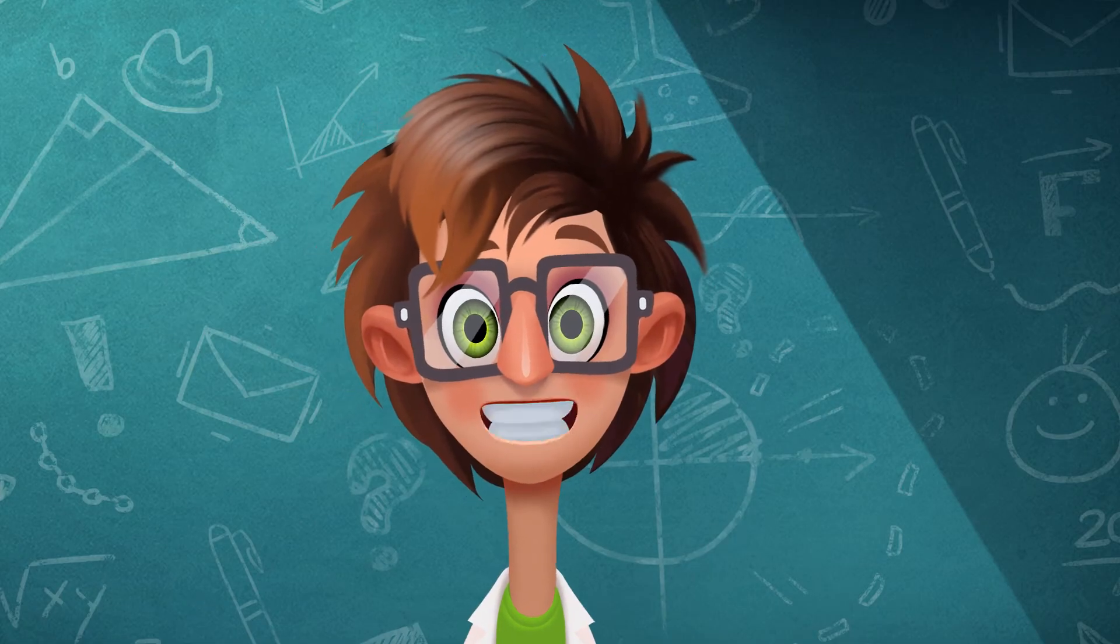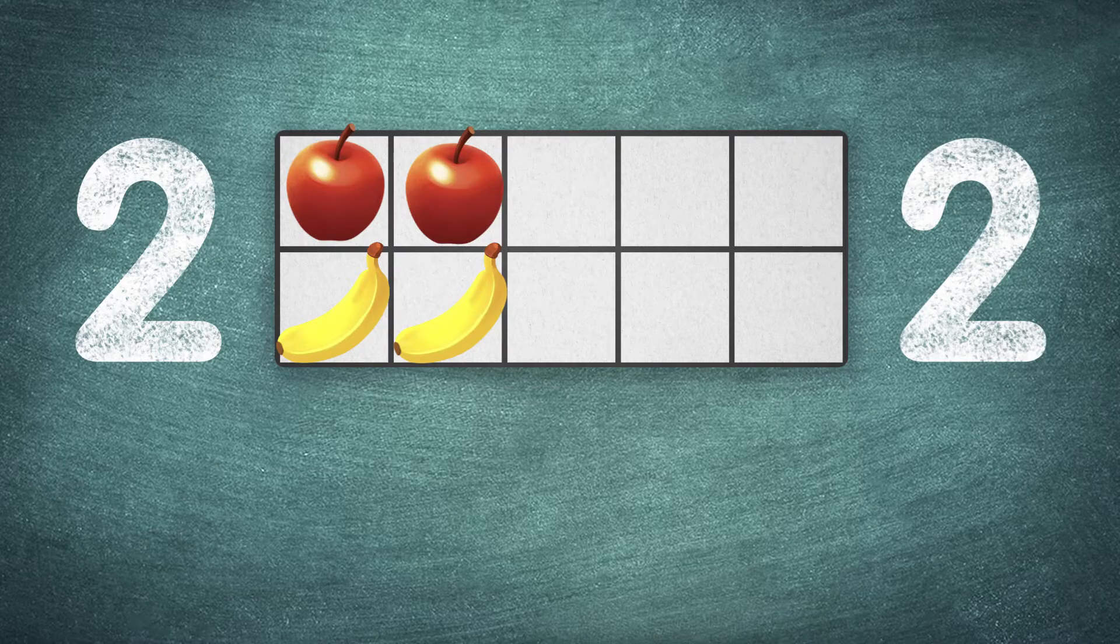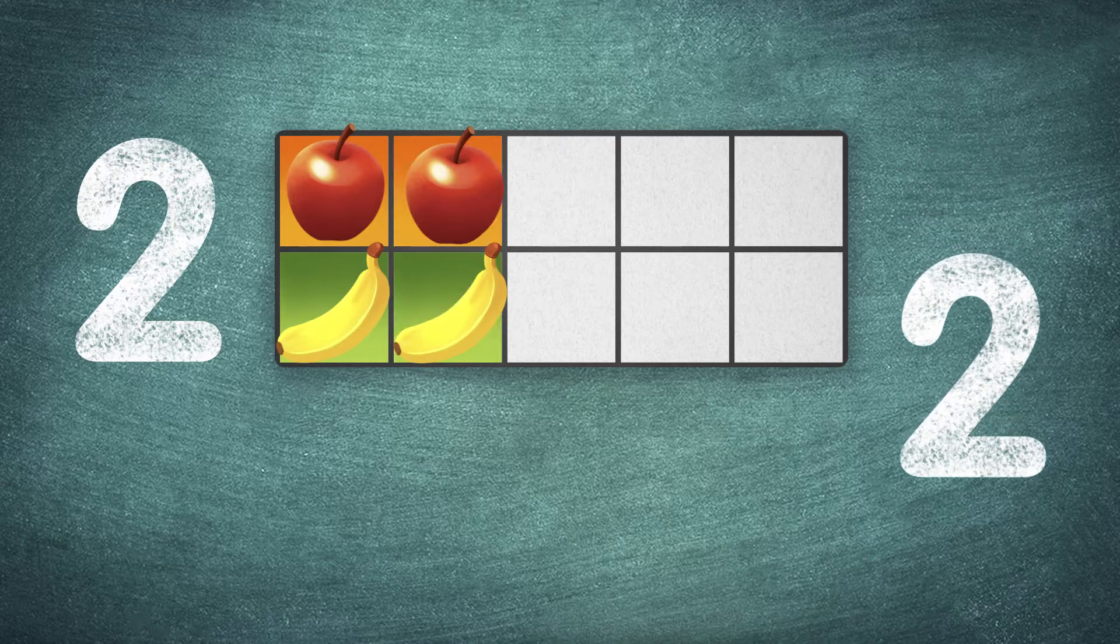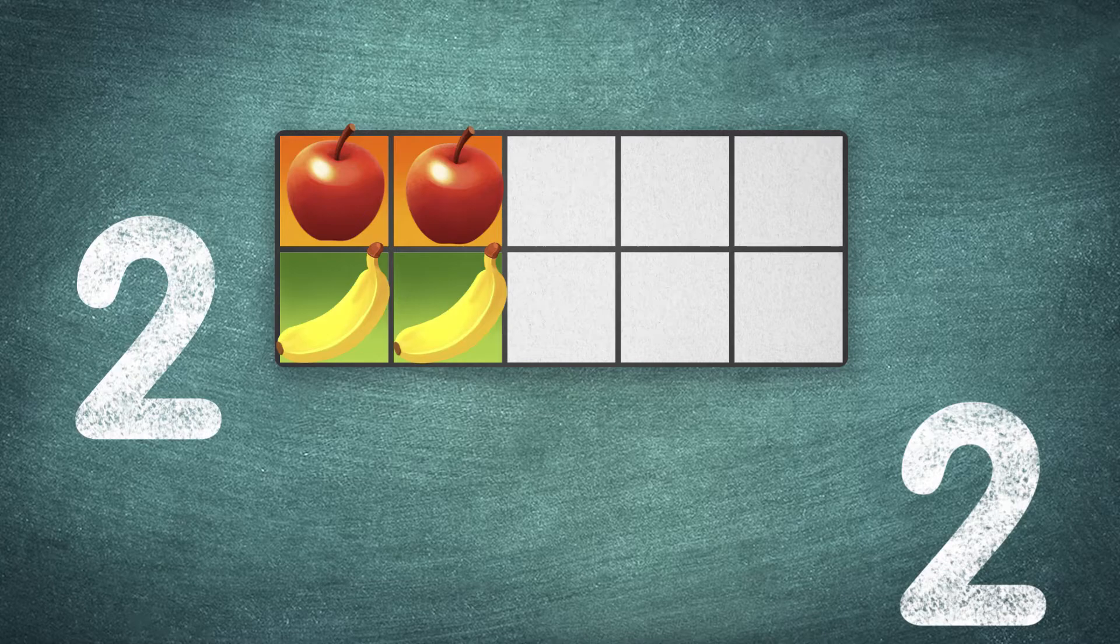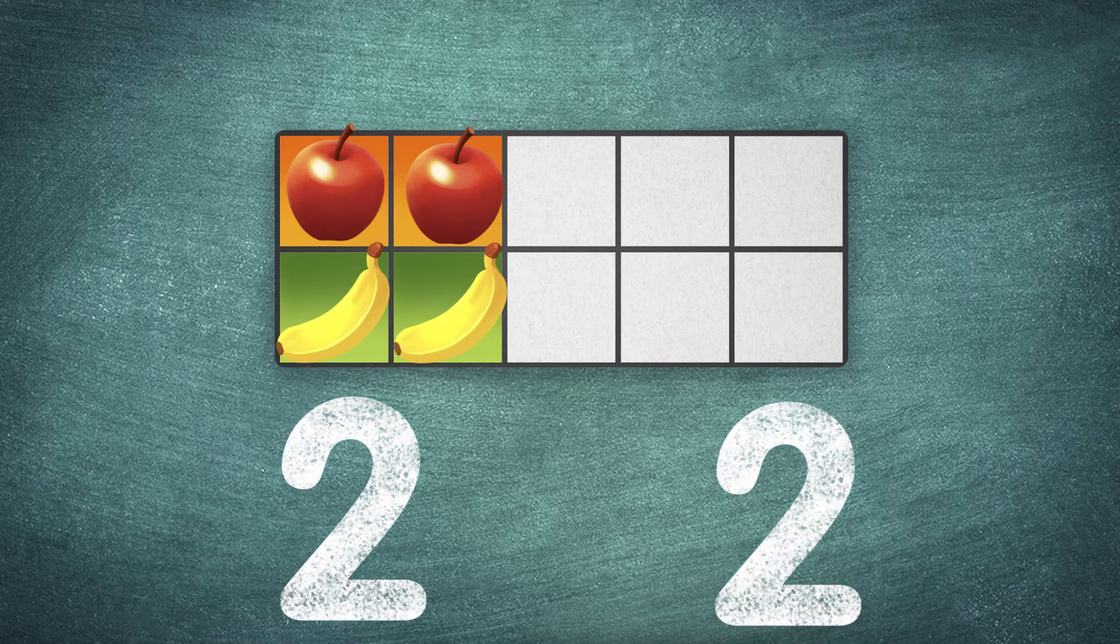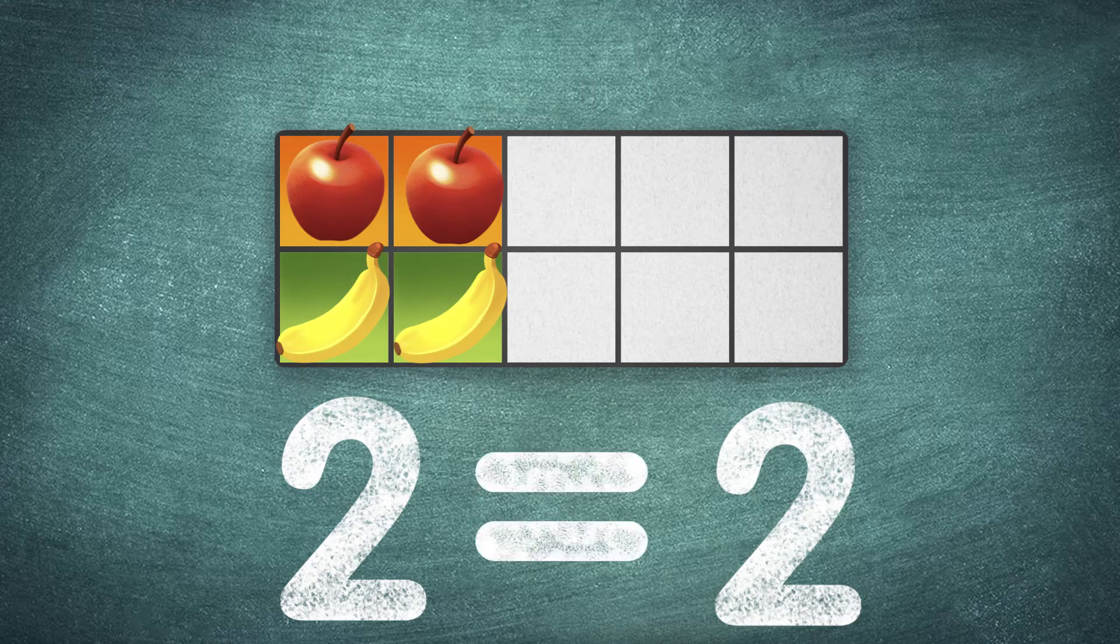Do we have more apples or bananas? Let's compare. One apple, one banana. Two apples, two bananas. There are two bananas and there are two apples. Two and two. The number of apples and bananas is the same. They're equal. Let's write the equal sign between them.